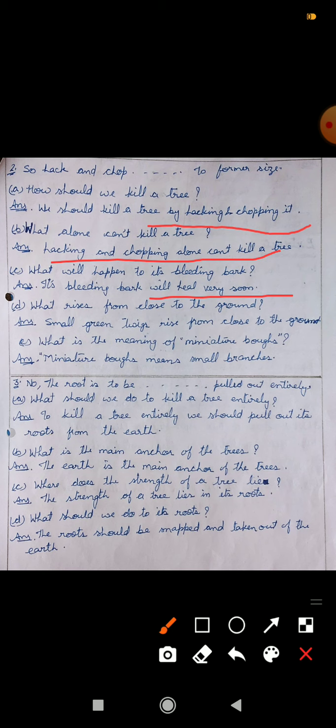It will heal very soon. Its bleeding bark will heal very soon. Bhojaldi, uska gao bhar jayega. Next, What rises from close to the ground? Ground ke paas se, zameen ke paas se kya nikalega? Small green twigs will rise from close to the ground. Chhote chhote si twigs nikal nish ho jayengi. Hari hari. What is the meaning of miniature balls? Miniature balls means small branches.